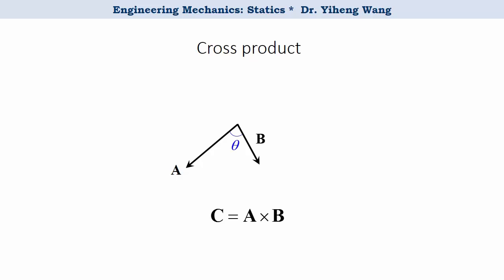The magnitude of vector C is determined as the magnitude of vector A times the magnitude of vector B times sine theta. That's the magnitude of the cross product.